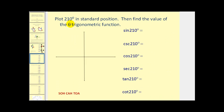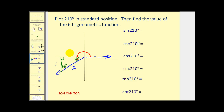Let's plot 210 degrees in standard position and find the six trig values. We rotate counterclockwise: 180 degrees, then 30 degrees more to our terminal side. Pick any point on the terminal side and connect it to the closest part of the x-axis to form the reference triangle. The reference angle is 30 degrees, so we have another 30-60-90 right triangle with sides in the ratio one, two, and square root of three. In this quadrant, the coordinate has both a negative x and negative y value.